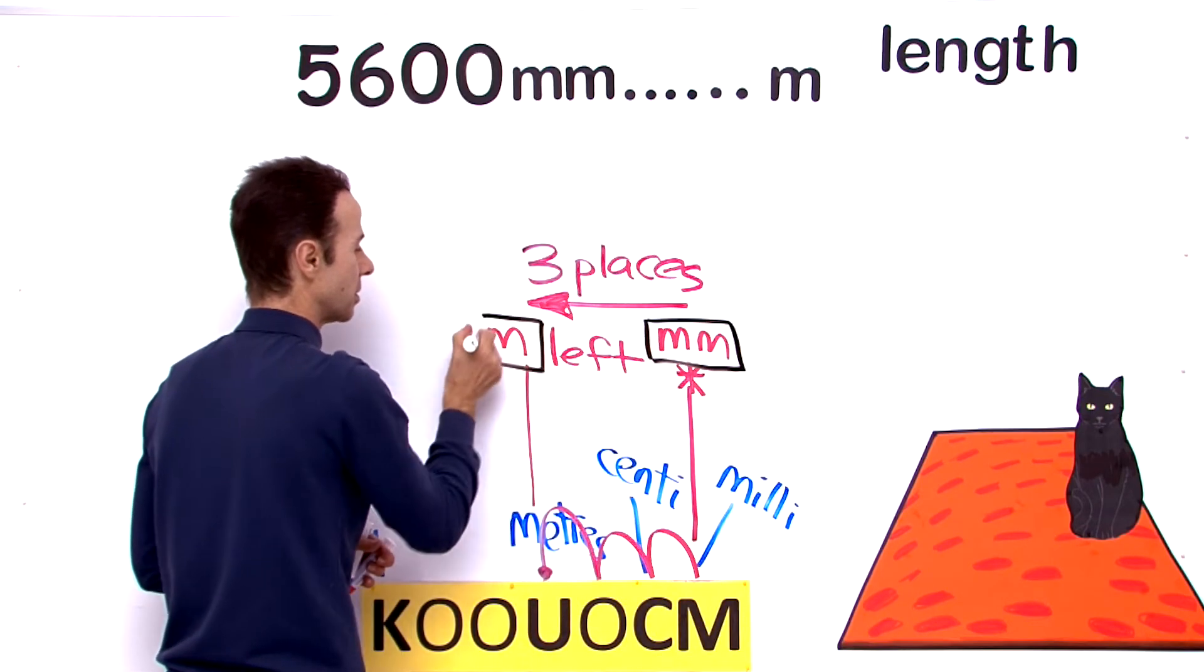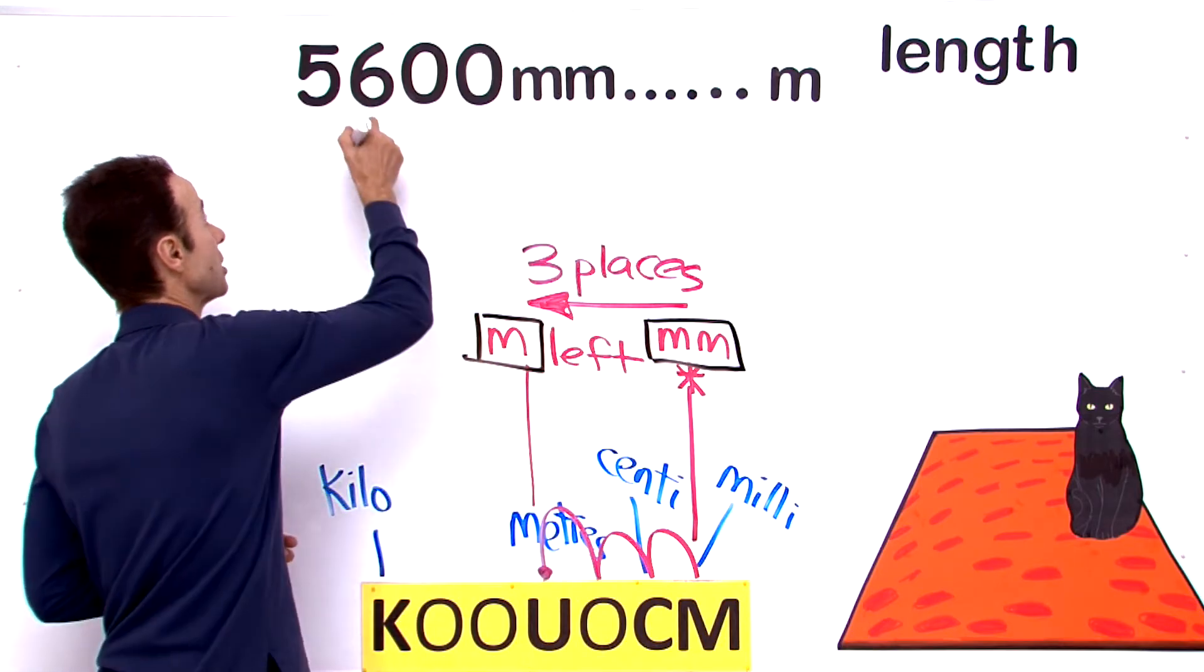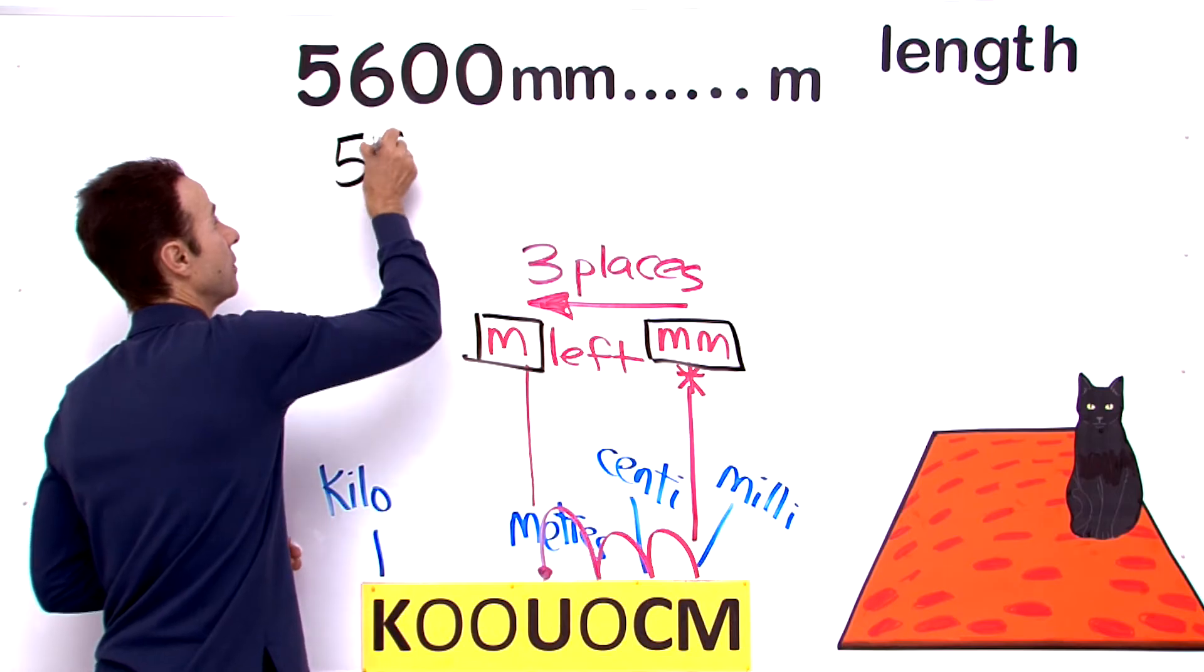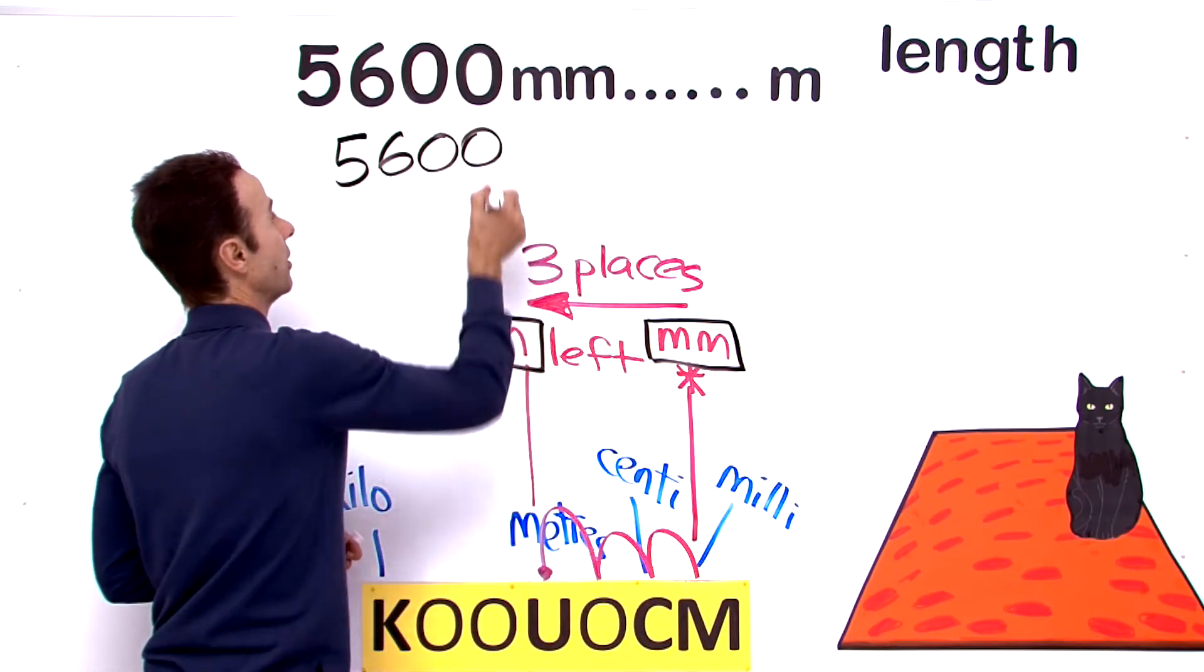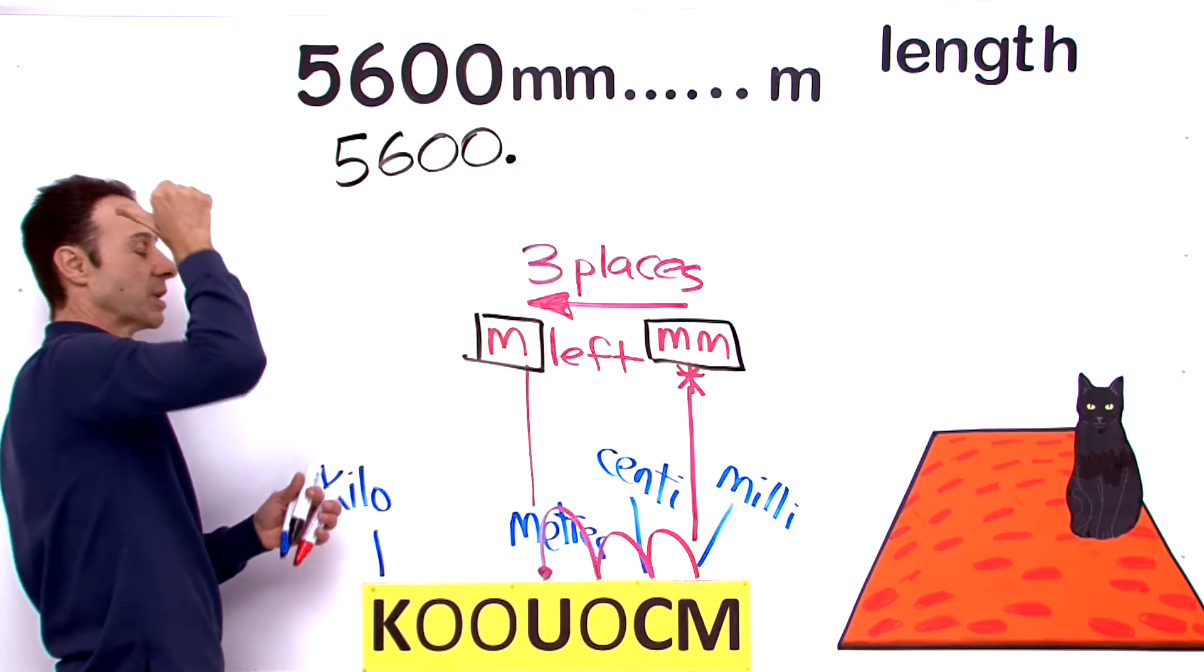Okay, let's move 3 decimal places for this guy here. So let's write out what we have: 5,600, and the decimal place is on the extreme right. We are going to move it how many places? 3 to the left.